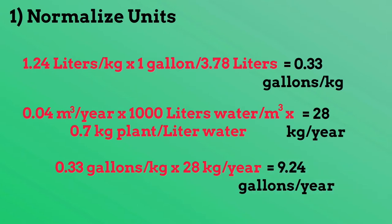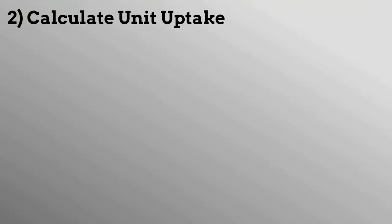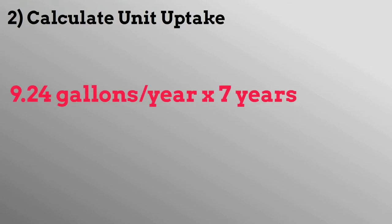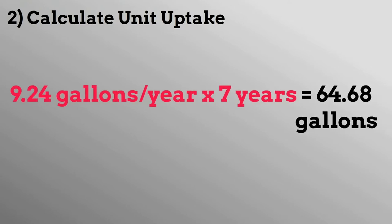Multiplying the annual mass growth rate by the uptake rate, we get an annual uptake of 9.24 gallons of contaminant. We can now take the contaminant uptake rate for one year and extrapolate it over seven years, and we get an uptake of 64.68 gallons over seven years for one plant.